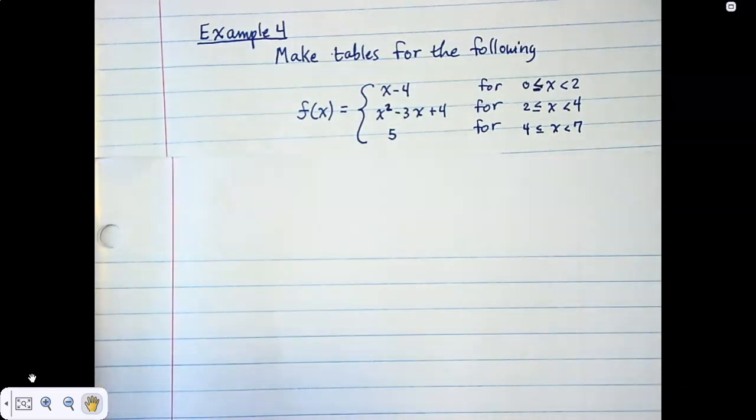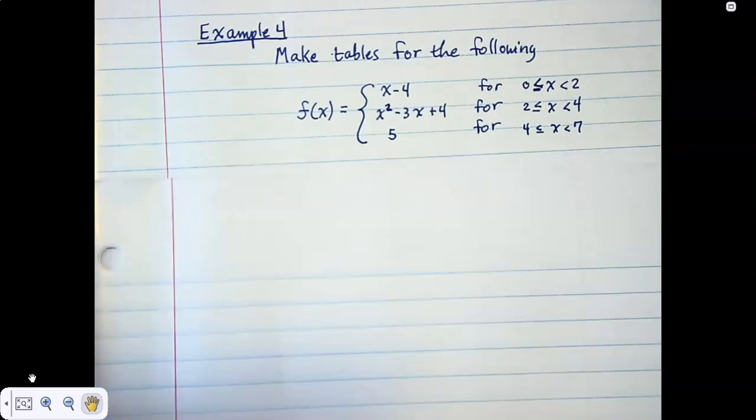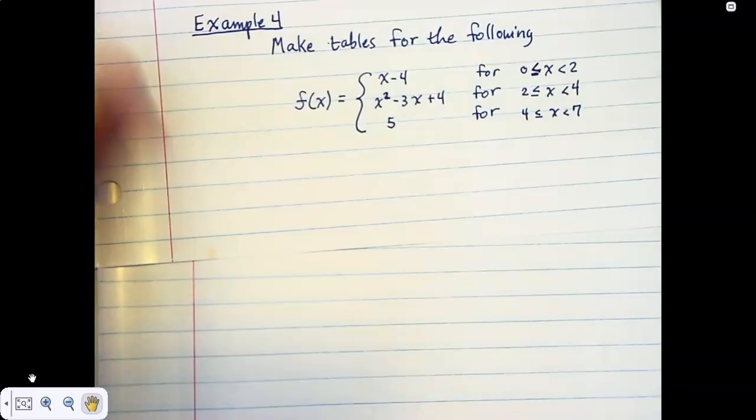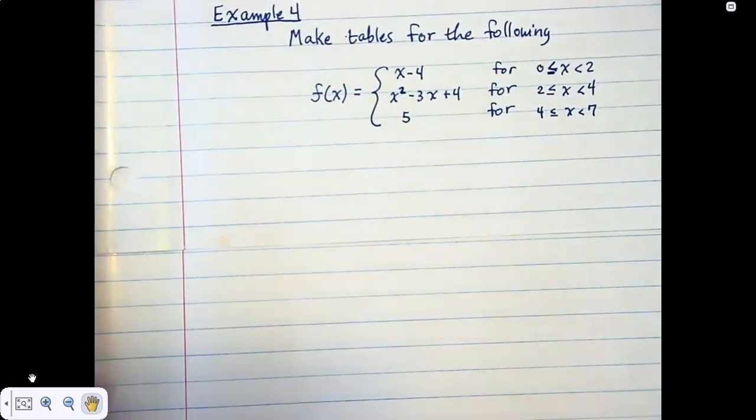Sorry, there's actually three equations here, so that means you have to have three tables. The last example, Example 3, we only had two tables because we had two equations. This time we have three tables because we have three equations.